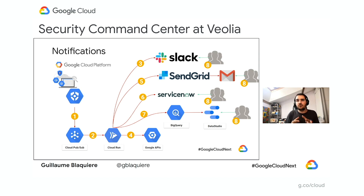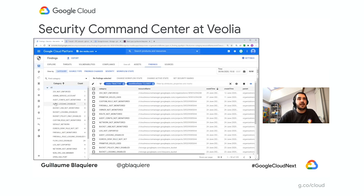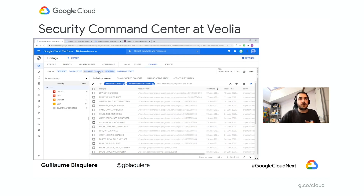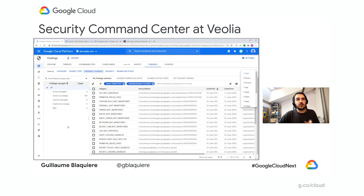Now I'd like to present a demo of what we have done with Security Command Center. Here with the firewall rules, just go to the findings. We are on the landing page for the findings and we can filter by security. My preferred view is the finding change view, because you can see what are the new findings in your environment — in your context — the last hour, the last day, the last week, and so on. It's very efficient to work with this.